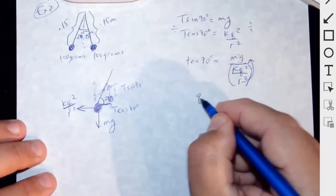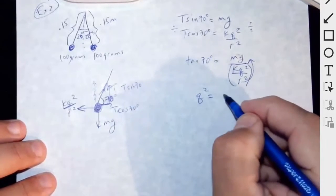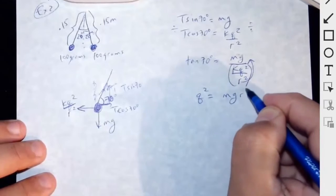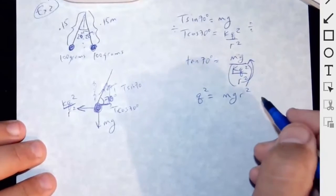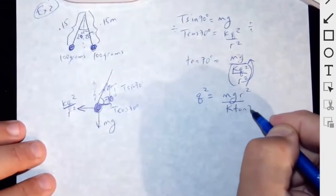So I have Q squared is equal to this one. This one was up there. So then you have Mg R squared divided by K tangent of 70.